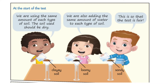We can see that Lily said she was also adding the same amount of water to each type of soil. For example, let us say half a cup of water to each type of soil. This is to make the test fair. She didn't put one glass in clay, half a glass in loamy, or a quarter glass of water into sandy soil. They were all having the same amount of water.